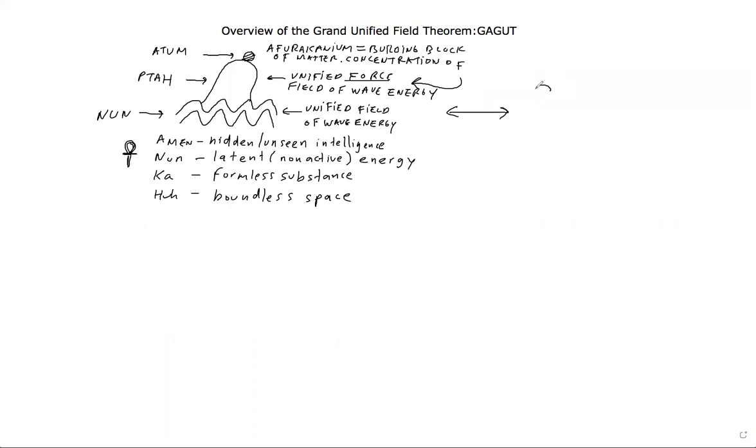So the equation is expressed as G subscript i j comma j equals zero.